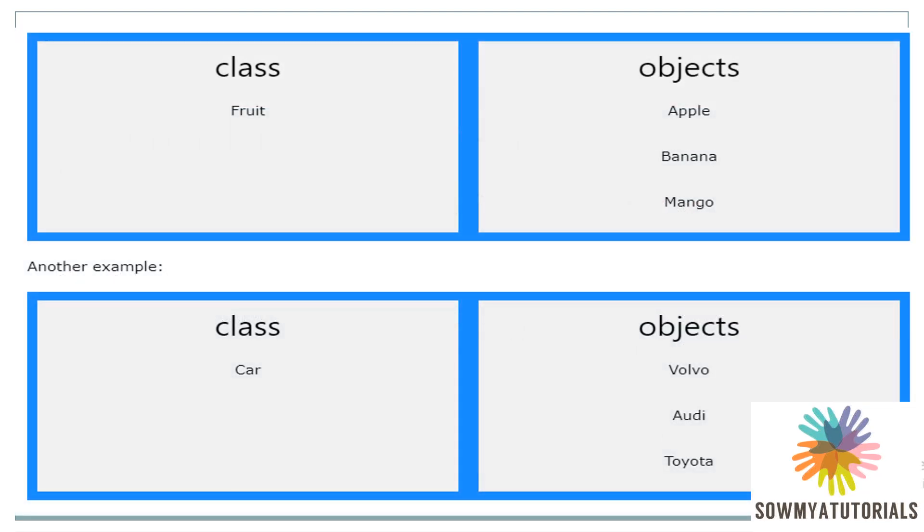Here is an example. The class name is Fruit. Fruit is one class. Its objects — apple, banana, and mango — are all fruits. These are objects under the category Fruit. One more example: the class is Car. The objects are Volvo, Audi, and Toyota. These are all objects under the class Car. These are real world examples for classes and objects.